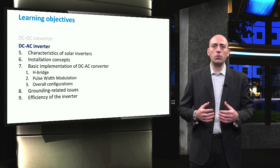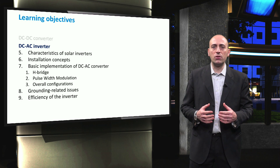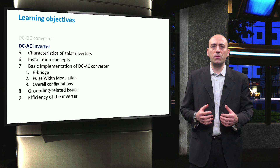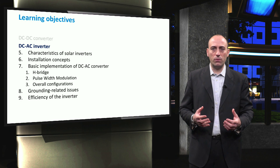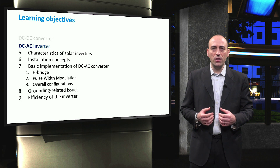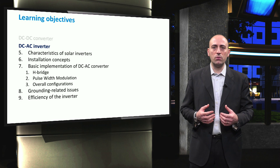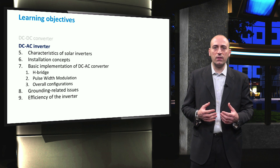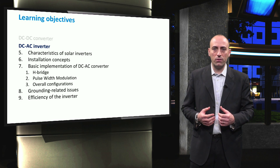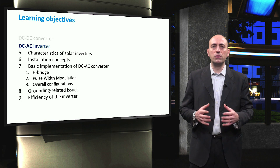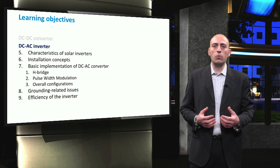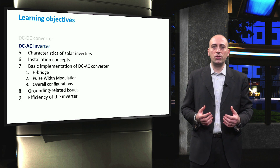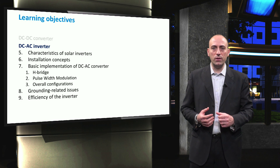For this purpose, usually pulse-width modulation is used. Then, in the lecture about the overall configurations, we ideally open an inverter and we see what the different parts involved are. In another video, grounding-related issues which can arise when connecting the PV modules to the inverter are treated. Finally, we conclude this series of videos discussing the efficiency of the inverter in order to be able to calculate the overall energy yield of a PV system throughout the entire year.